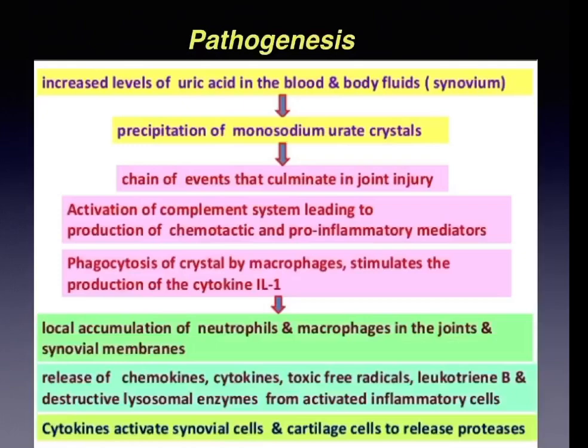The basic abnormality in gout is hyperuricemia. Increased uric acid levels lead to precipitation of monosodium urate crystals, triggering a chain of events: activation of the complement system producing chemotactic and pro-inflammatory mediators; phagocytosis of monosodium urate crystals by macrophages stimulates cytokine production; local accumulation of neutrophils and macrophages in joints; and release of chemokines, cytokines, toxic free radicals, and destructive lysosomal enzymes. Cytokines activate synovial and cartilage cells to release proteases, resulting in tissue injury.